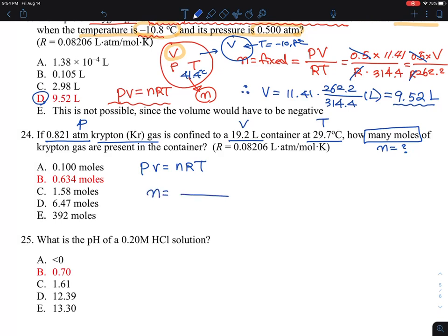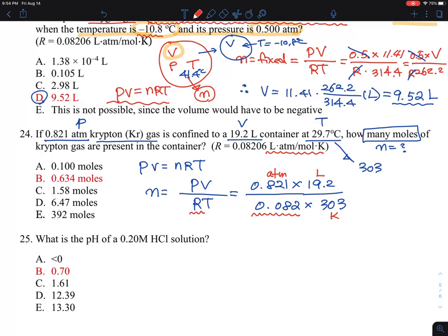And then pressure is 0.821, volume is 19.2, 0.082, and this one is close to 303, so 303 Kelvin. Once again, I just wanted to recap once more. This is a unit of ATM, and this is liter, and that's my choice. So therefore, I can happily use this R, which is a unit of cancelling unit. So what you have left with is whatever number you will have will be a unit of mole.